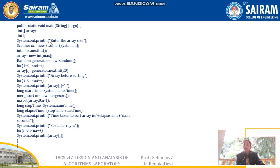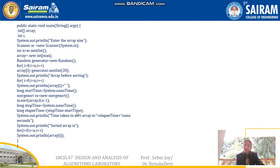In the main function, we read the value of n from the user by creating a Scanner object. Then we call the random generator function to generate n numbers randomly using the nextInt function. We print the array before sorting so we know which elements were generated randomly. Then we record the start time using System.nanoTime(), call the merge sort function, and record the stop time. The elapsed time is stop time minus start time, which is printed as the time taken to sort the array. Finally, we print the sorted array.